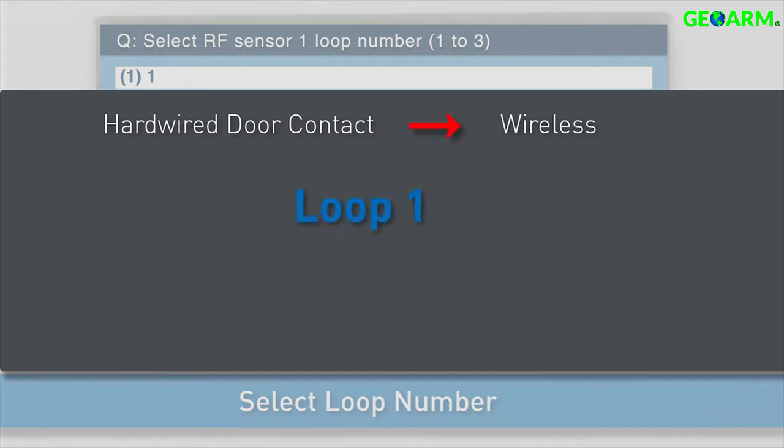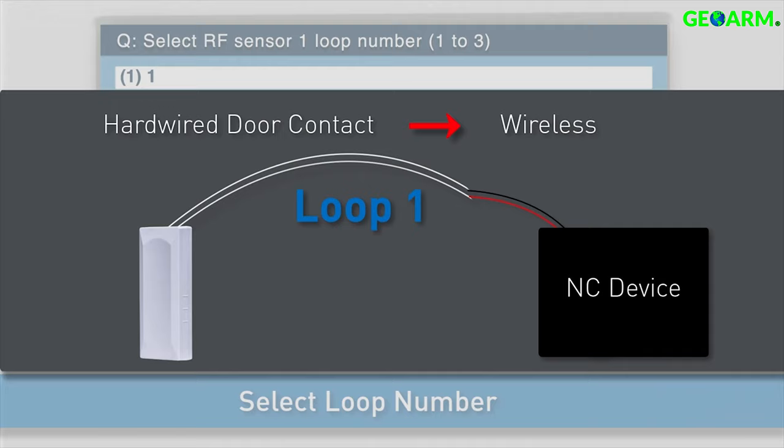use loop 1. This will require you to connect one end of the included wire lead into the transmitter and the other end to a normally closed device. Note, for this option, the magnet is not used.